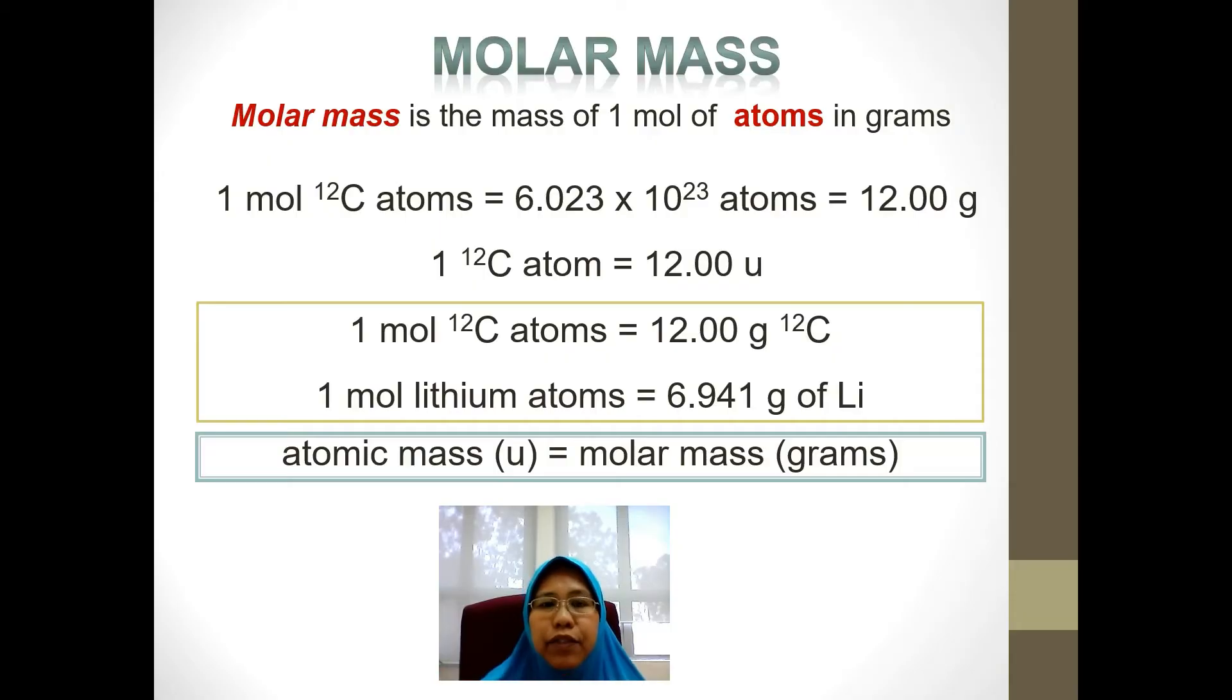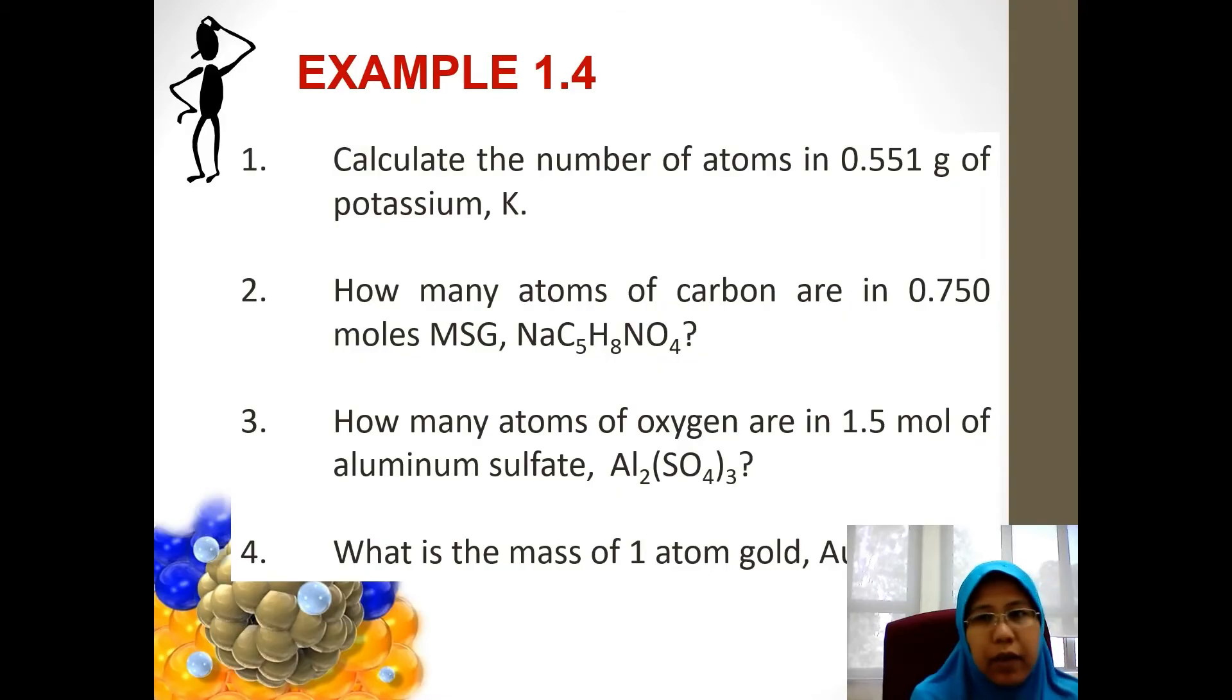Next we look at the definition of molar mass. Molar mass is the mass of one mole of atoms in grams. This is the important part whereby for one mole of carbon-12 atoms it has 6.023 times 10 to the power of 23 atoms, that is basically 12 grams of mass. So for lithium you have 6.941 grams in one mole, and so on for all of the elements in the periodic table. For one element, for any element, the atomic mass unit is actually the same as the molar mass in grams.